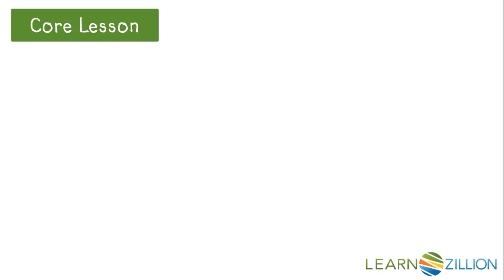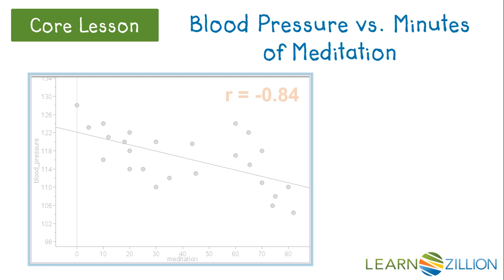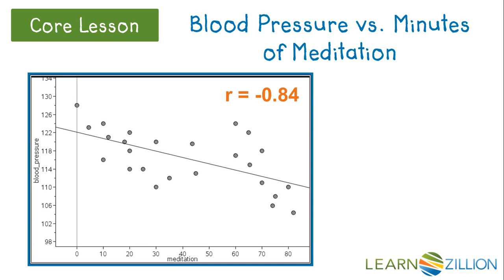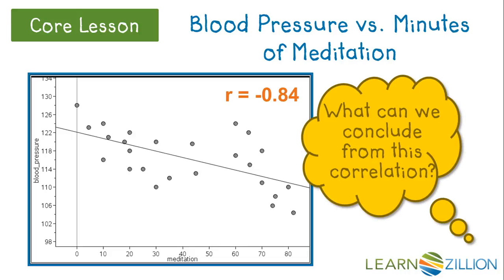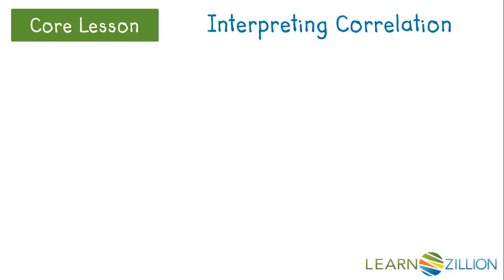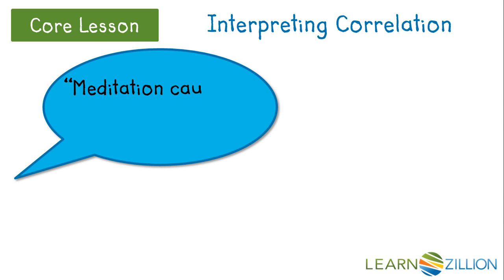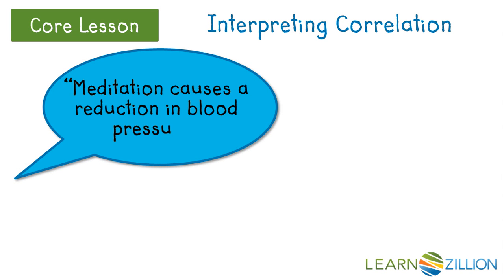Now let's try the same exercise in a situation where it's more tempting to suggest causality. Suppose a sample of people are questioned about how often they meditate and their blood pressure is measured. If the correlation between these two variables is negative 0.84, what can we conclude? Can we say that meditation causes a reduction in blood pressure? No, because this clearly implies causality.